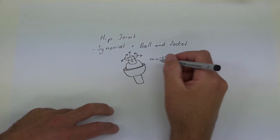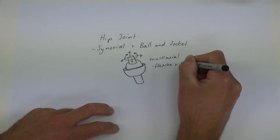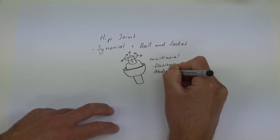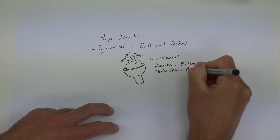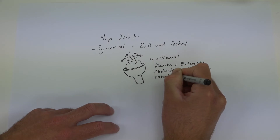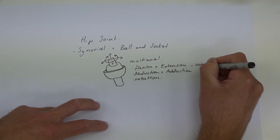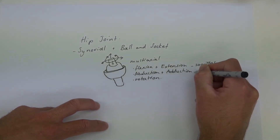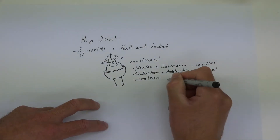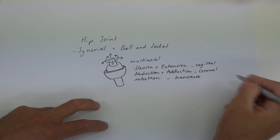The motions that occur around the hip joint are: flexion and extension, abduction and adduction, and rotation. Flexion and extension occur in the sagittal plane, abduction and adduction in the coronal or frontal plane, and rotation occurs in the transverse or horizontal plane.